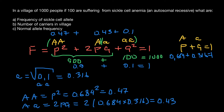If we add all three frequencies, as you can see, we get one. If you need the answer in percentage form, we just multiply these numbers by 100, giving us 47%, 43%, and 10%. Now, the frequency of the sickle cell allele — the recessive allele — is 0.316.